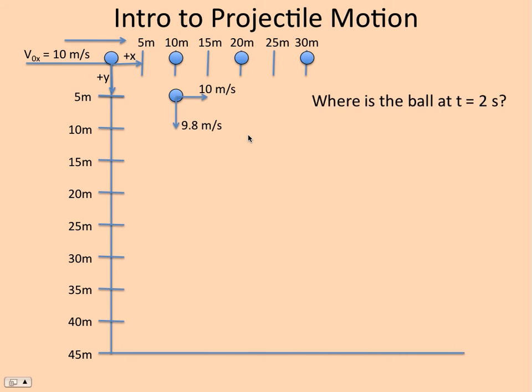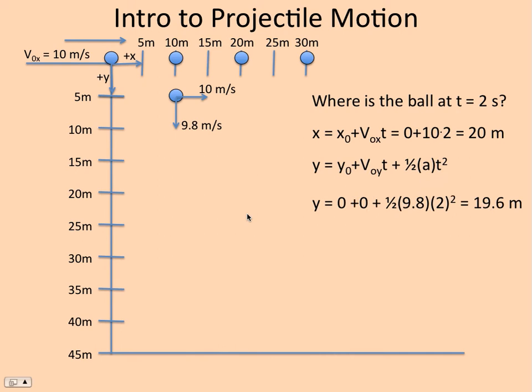How about two seconds? We know where it is in the x. It's at 20 meters. The trick is to find where below this point it is in the y. So we look at the y motion. Again, no initial y velocity. We get 19.6 meters. So it's going to be there.